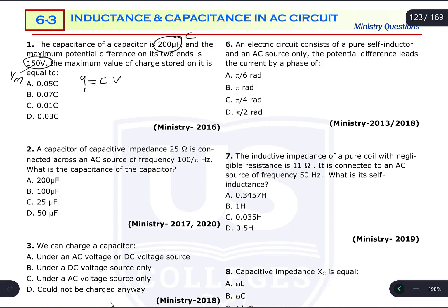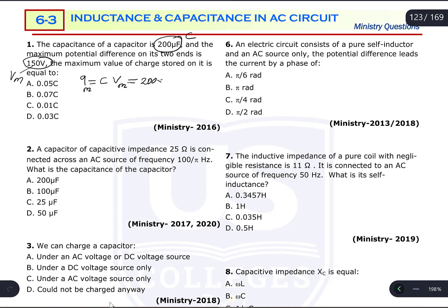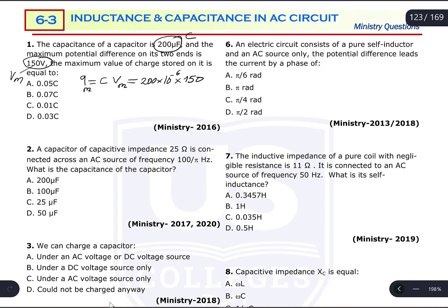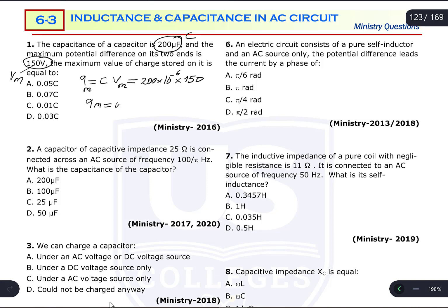Since maximum charge is the question, we multiply capacitance by maximum potential difference. Capacitance is in microfarad, which must be converted to farad by multiplying by 10 to the power of negative 6, then multiply by 150 volts. Using the calculator: 200 times 10⁻⁶ times 150 gives 0.03, so the maximum charge stored is 0.03 coulombs.